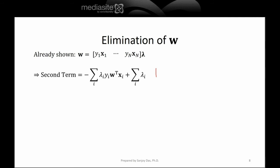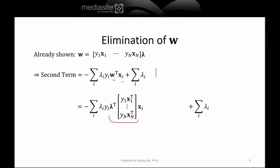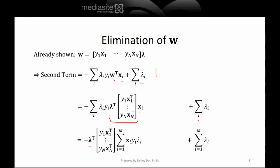Continuing with the second term: we replace W transpose with the expression summation Lambda_i Y_i X_i. After substitution, we get negative Lambda transpose times the quantity (summation Lambda_i Y_i X_i), with everything that doesn't contain the index i taken outside. What remains inside is summation Lambda_i Y_i X_i, plus the second part summation Lambda_i.